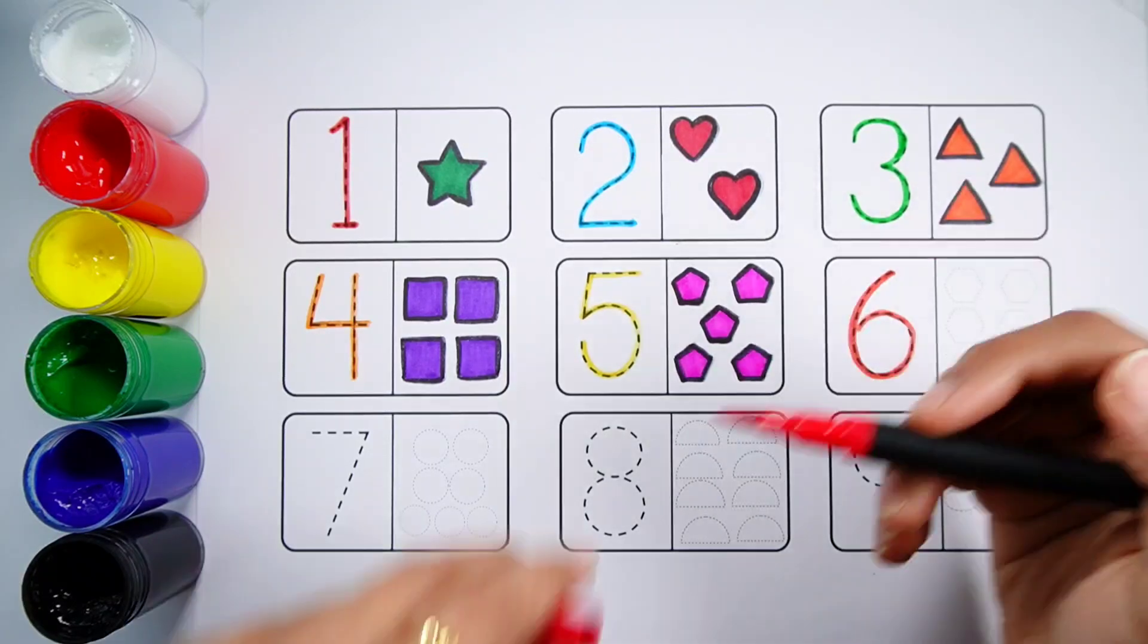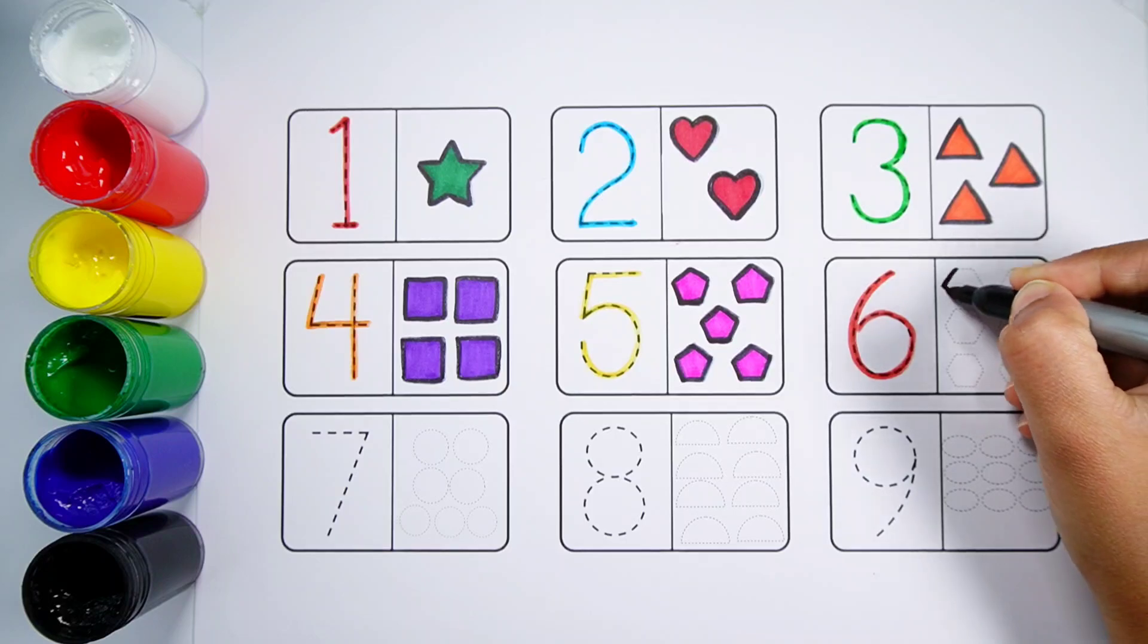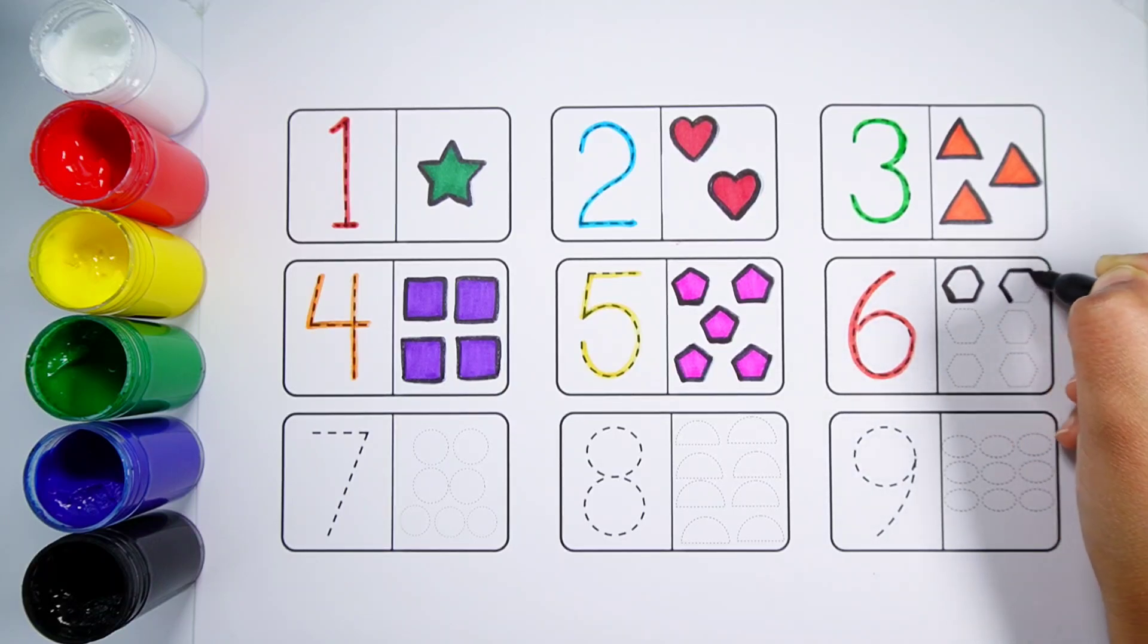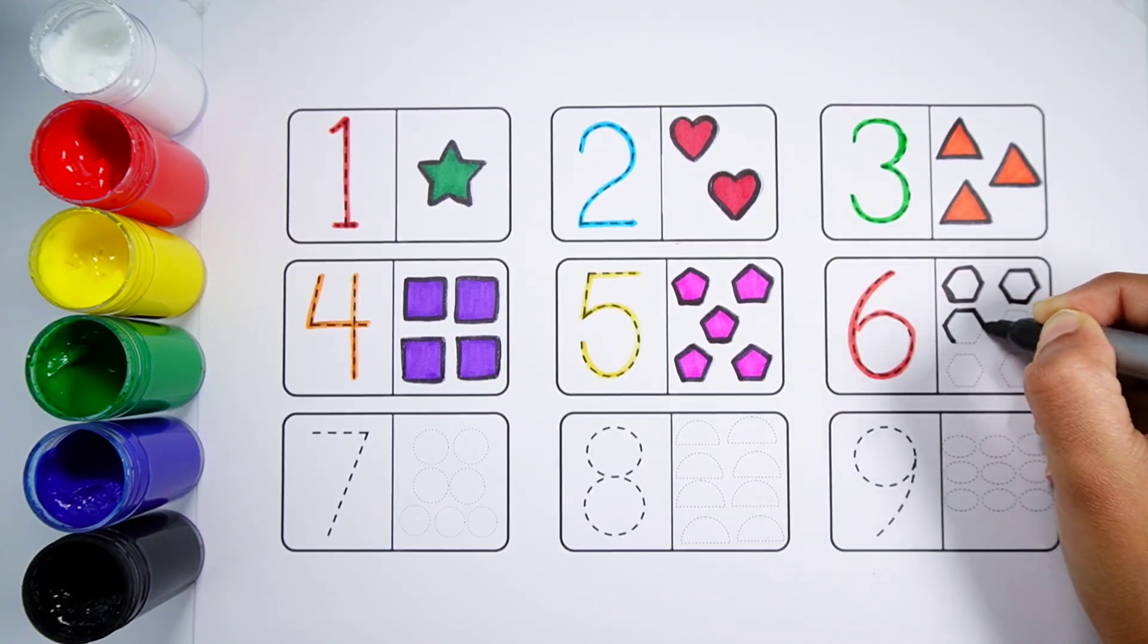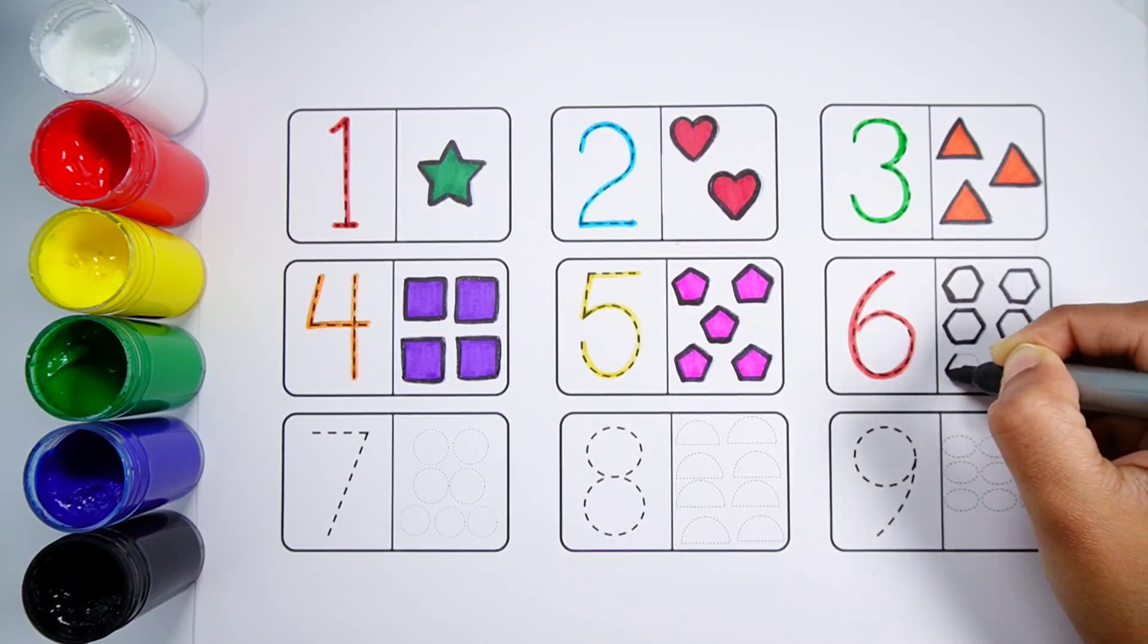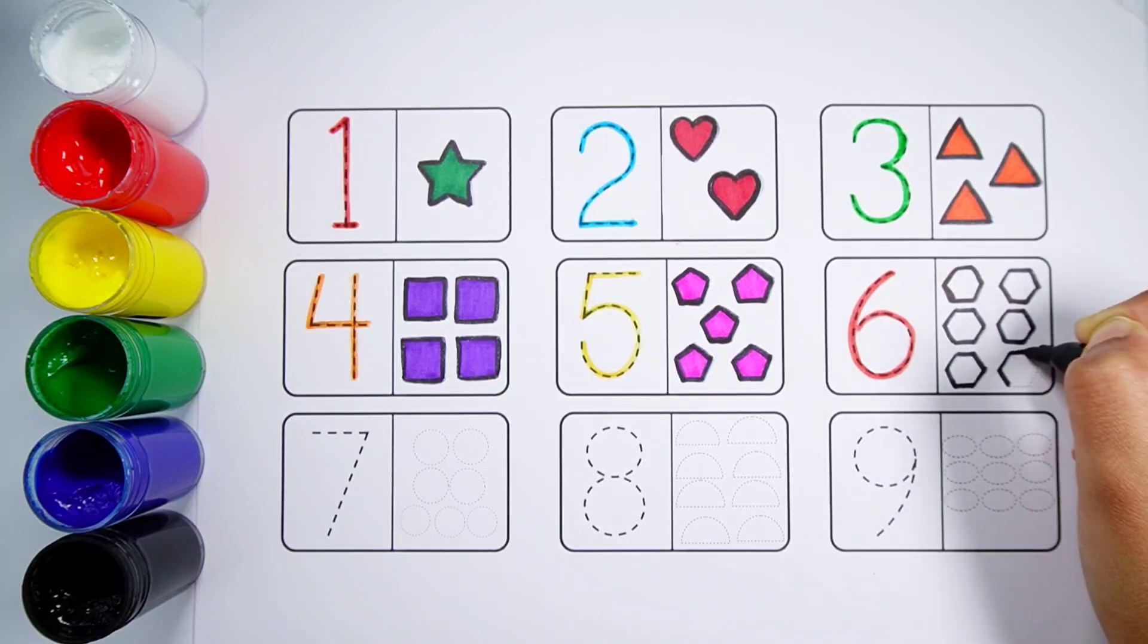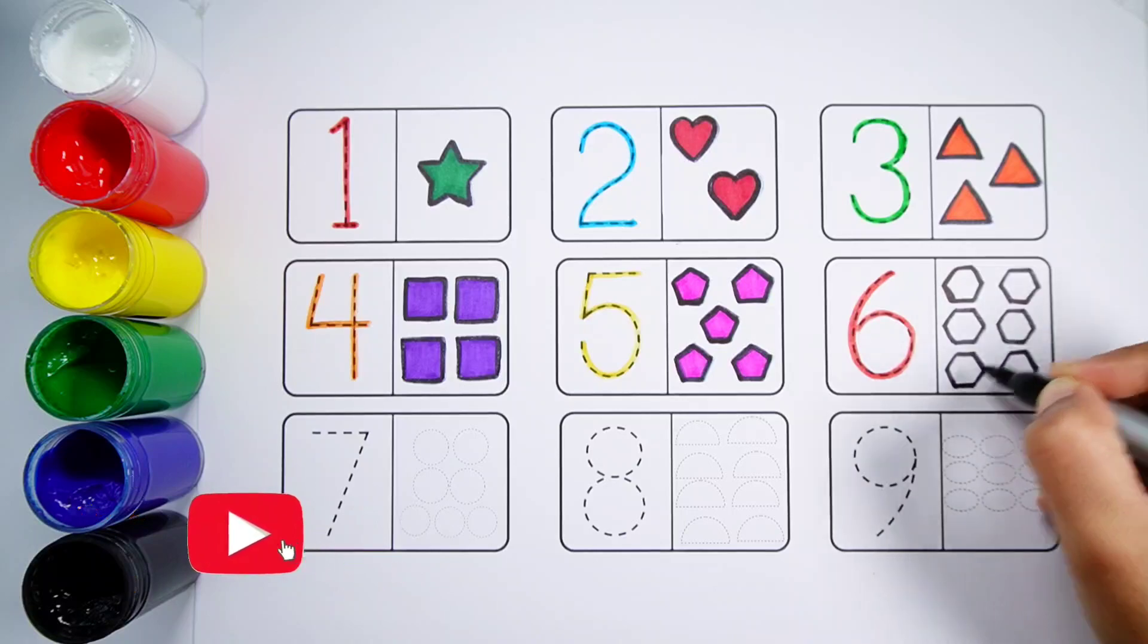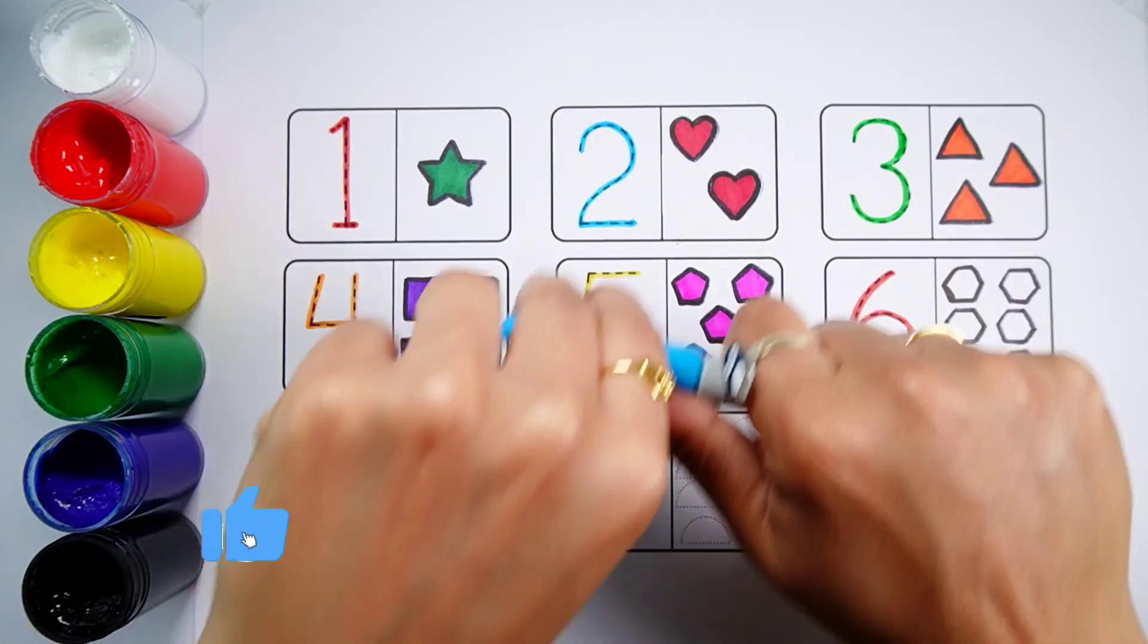Number 6. One, Two, Three, Four, Five, Six. Six Hexagons. Blue Color.